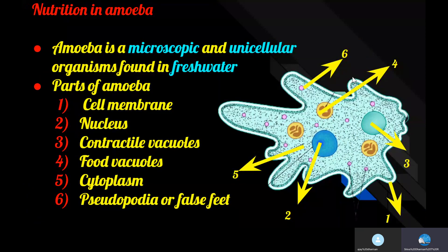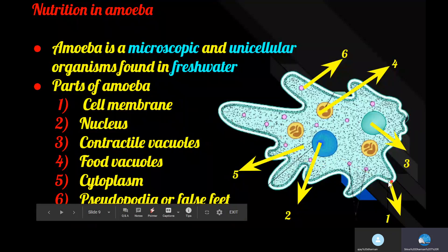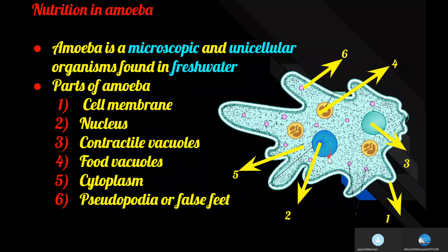Now let us learn about nutrition in amoeba. Amoeba is a microscopic, unicellular organism mostly found in fresh water like ponds and rivers. The parts of the amoeba include the cell membrane, nucleus, contractile vacuole, food vacuole, and cytoplasm.